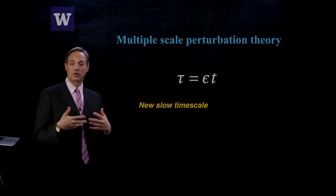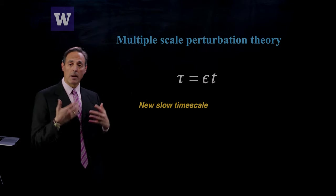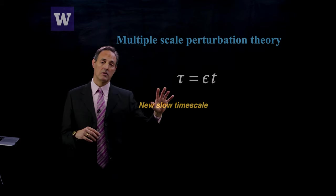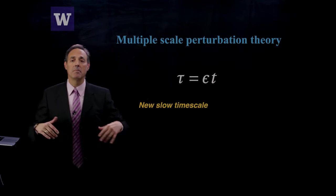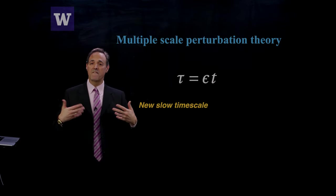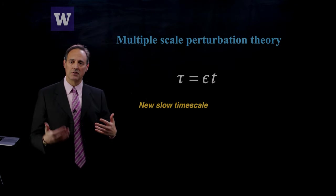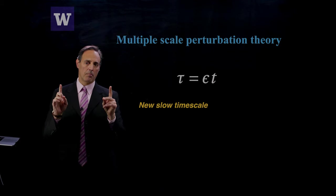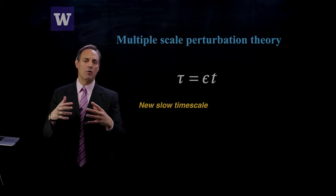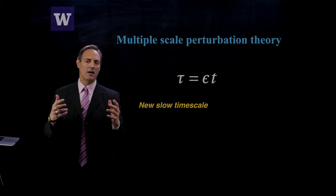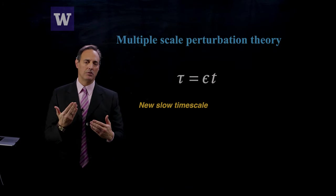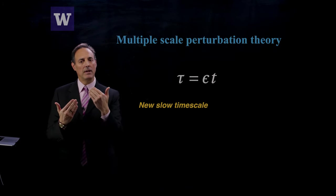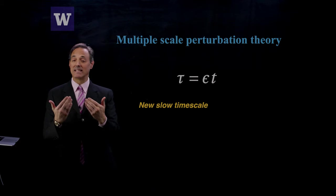Epsilon is our small parameter. I'm going to introduce this slow time, and now I'm going to make my solutions be a function of two time scales, t and tau. Unlike Poincaré-Lindstedt, where I trade it out to a new time scale, I retain my original time scale and introduce simply a second time scale as an independent variable.